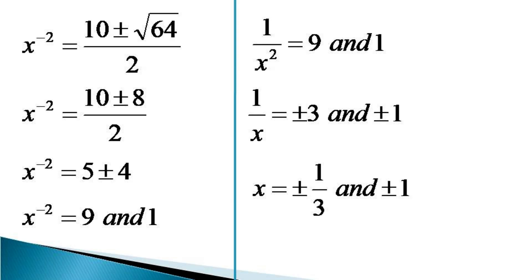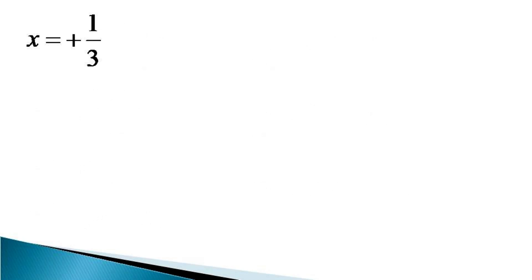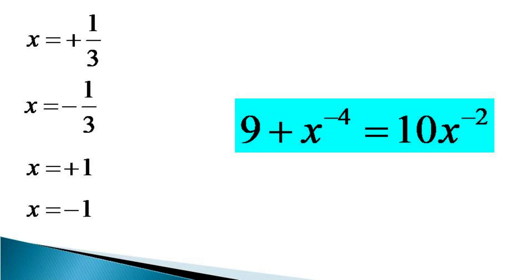So we have four solutions: x equals plus 1 by 3, x equals minus 1 by 3, x equals plus 1, and x equals minus 1. It can be verified using the given equation that all these values satisfy it. Hence, all four — plus 1 by 3, minus 1 by 3, plus 1, and minus 1 — are the solutions of the given equation.